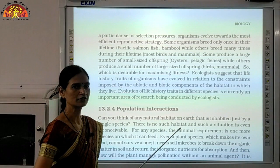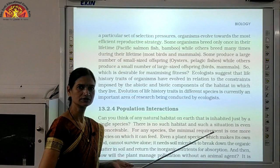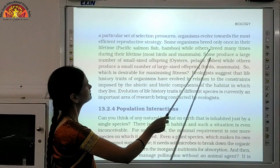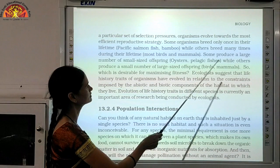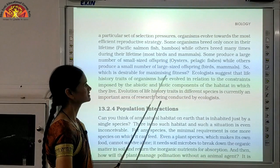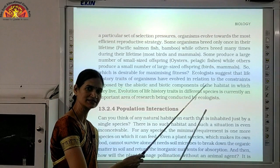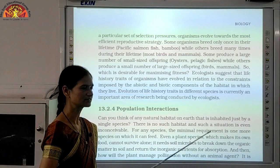A particular set of selection pressures causes organisms to evolve towards the most efficient reproductive strategies, depending on their habitat. Some organisms breed only once in their lifetime — for example, bamboo trees and specific salmon fish — while others like most birds and mammals breed many times in their life. Some produce a large number of small-sized offspring, like oysters and pelagic fishes, whereas birds and mammals produce fewer offspring of large size.